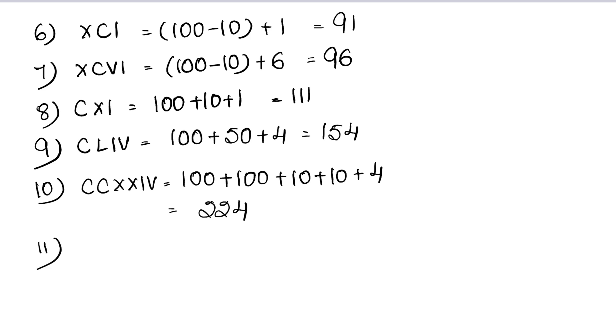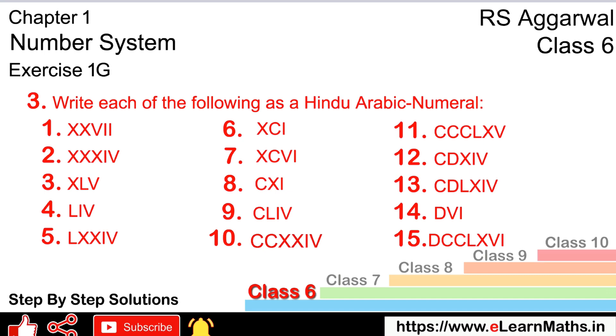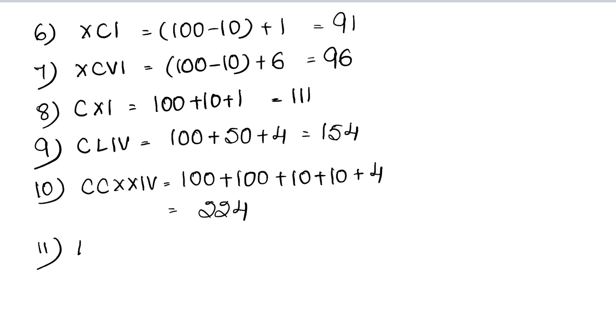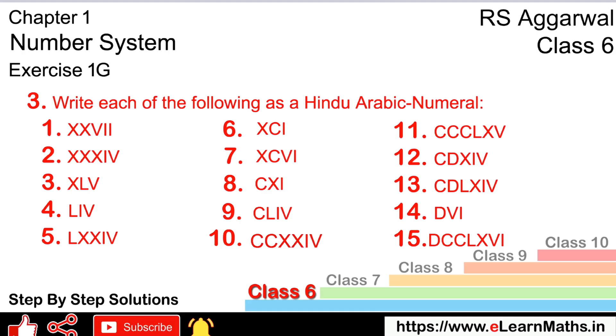Eleventh part, three times CLXV. C is 100 plus 100 plus 100. No sign repeats more than 3 times. L is 50, X is 10, V is 5, so that is 365.